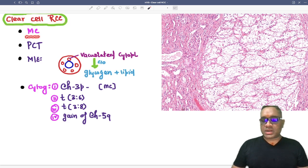which is the most common type of RCC. Their origin is from the PCT, which means proximal convoluted tubule. On microscopic examination, they will have vacuolated cytoplasm. That is why this is called as clear cell.